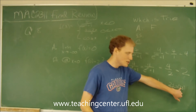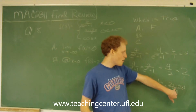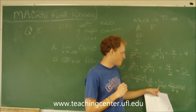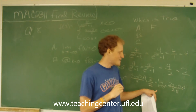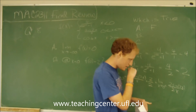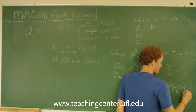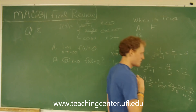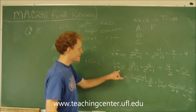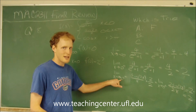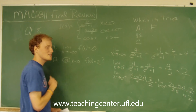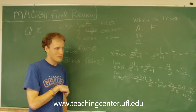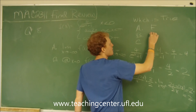Any time we have the sine of theta over theta, that limit equals 1 as x approaches 0. So it equals 2 times 1, which equals 2. We see that the left-side limit equals the right-hand side limit, so this function can be made continuous by defining f of 0 equal to 2. B is true.